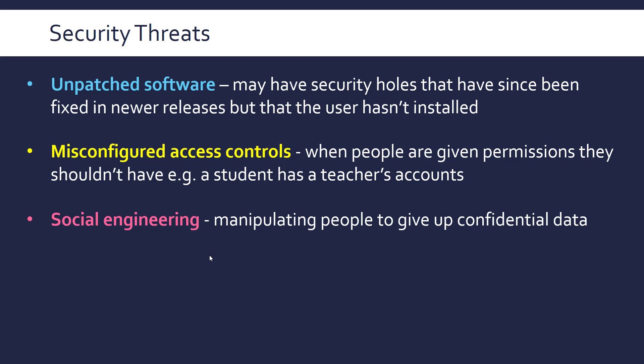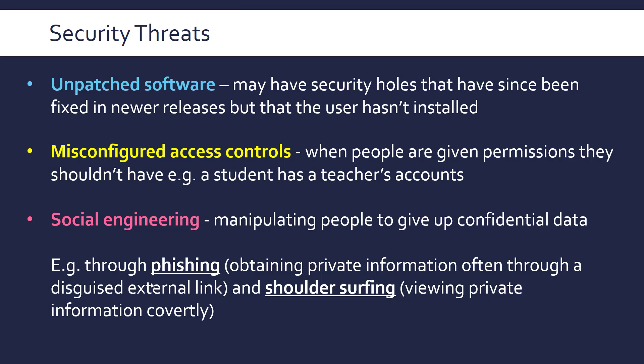Social engineering is a major subcategory — it's about manipulating people to give up confidential information. Phishing involves obtaining private information using a disguised external link, commonly via an email that looks like it's from a trusted source like a bank, containing a link to a fake site or malware. Shoulder surfing is viewing private information covertly — such as watching someone enter their PIN at an ATM. Defenses include staff education and being cautious entering private information in public.